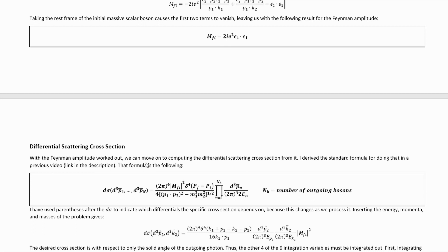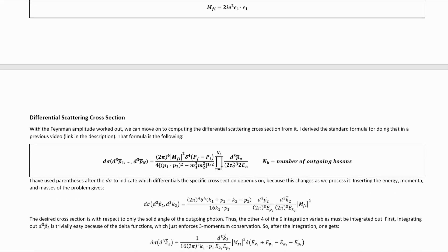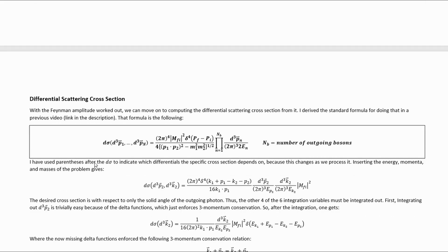With the Feynman amplitude worked out, we can move on to computing the differential scattering cross-section from it. I derived the standard formula for doing this in a previous video. I have used parentheses after the dσ throughout the rest of this calculation to indicate which differentials the specific cross-section depends on, because this changes as we process it.